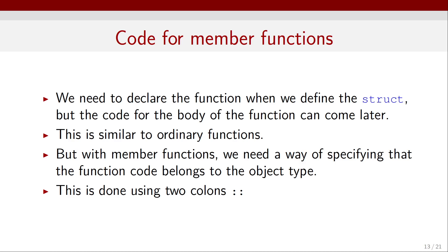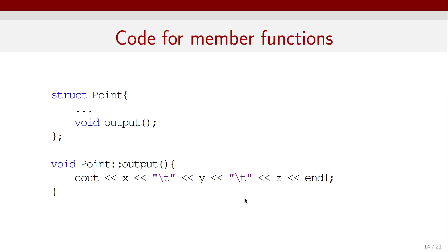But with member functions, we need a way of specifying that the function code belongs to that object type. And this is done using two colons like this. So here, for example, I have a structure Point and I declare this void output function inside that structure.